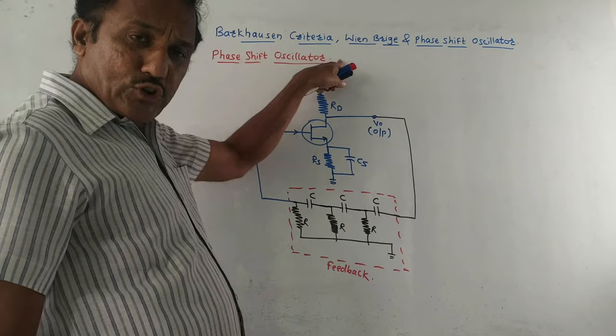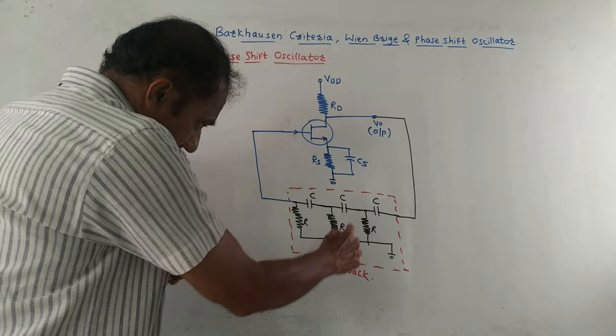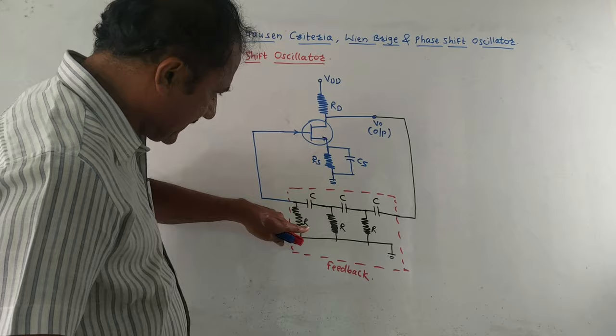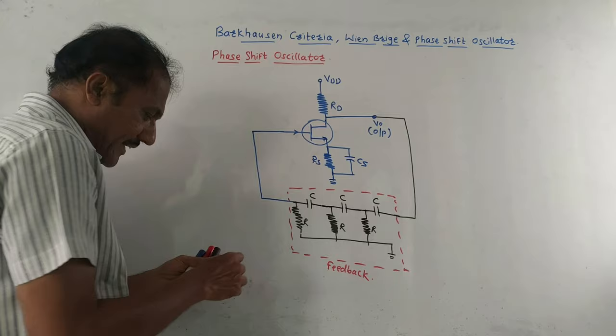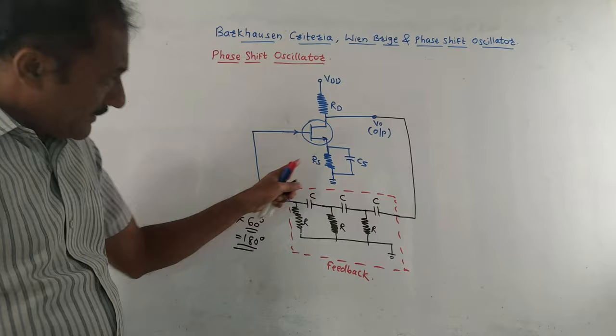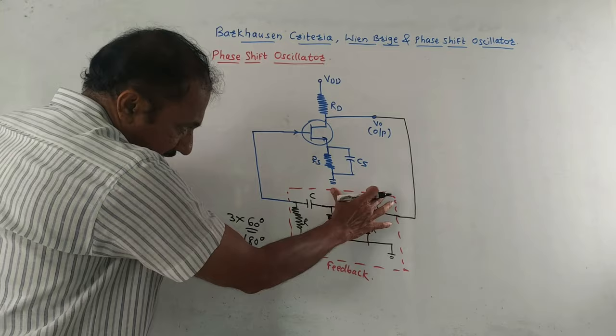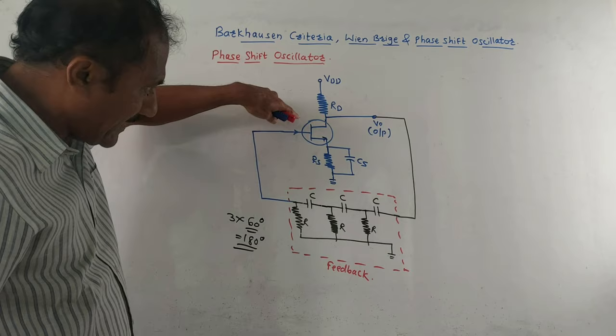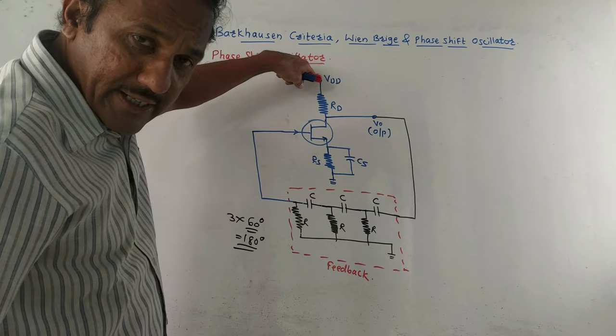The next part is the phase shift oscillator using MOSFET. The concept of the phase shift circuit is that it consists of three RC circuits. Each RC circuit — R is resistor, C is capacitor — produces a phase shift of 60 degrees. Three such RC circuits together produce a total phase shift of 3 × 60 = 180 degrees. This RC circuit is also called a ladder network and is placed in the feedback path.